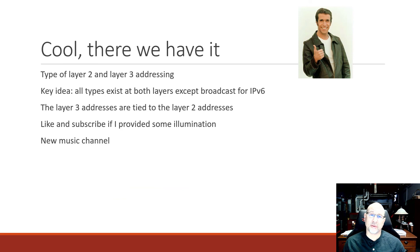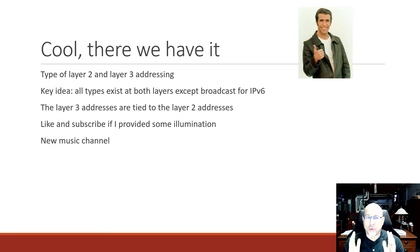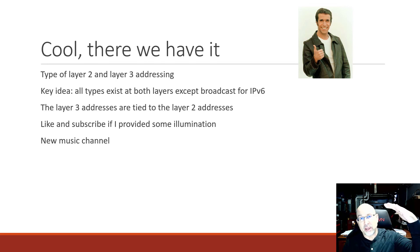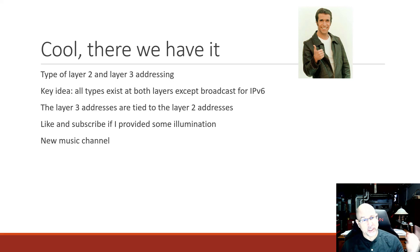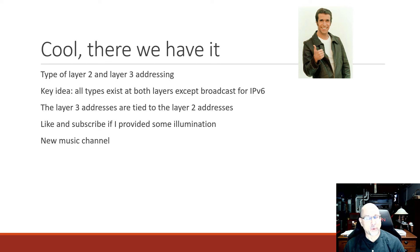Layer 2 and Layer 3 addressing — what we have to remember is that at both layers we've got unicast, broadcast, and multicast, unless we're talking about IPv6, in which case there's no broadcast. Layer 3 and Layer 2 addresses are tied together, so what goes on at Layer 3 happens at Layer 2. But that's not always the same starting at Layer 2, because there's not always a Layer 3 address involved. Thanks for watching and listening — like and subscribe if I provided some illumination. Whether you're talking about Layer 2 or Layer 3, IPv4 or IPv6, may those packets always reach those destinations.